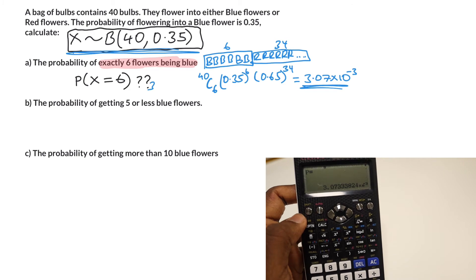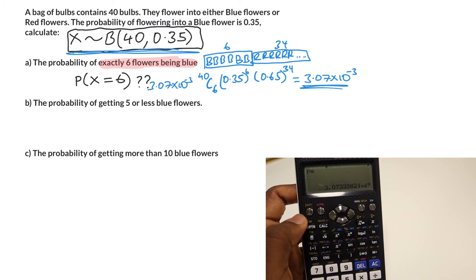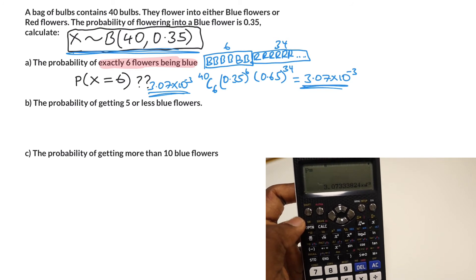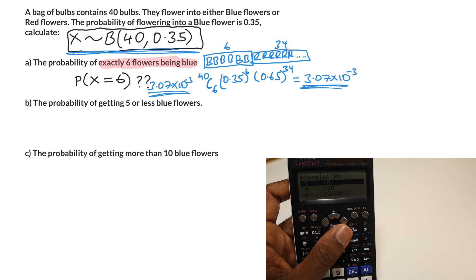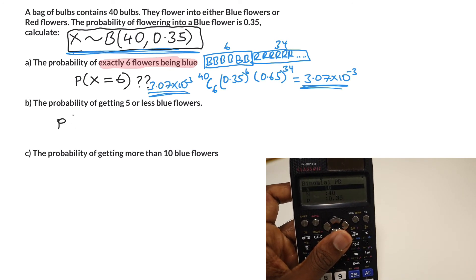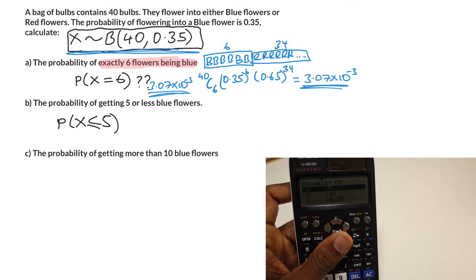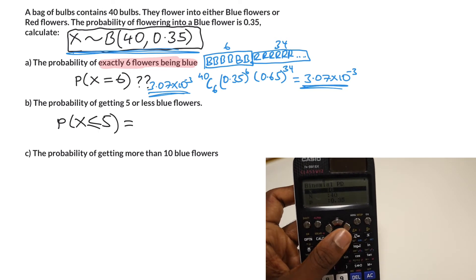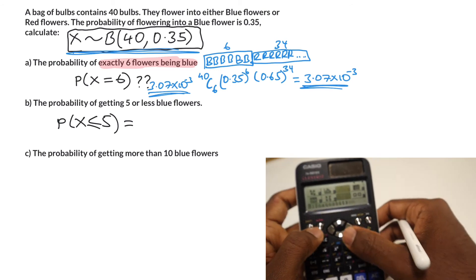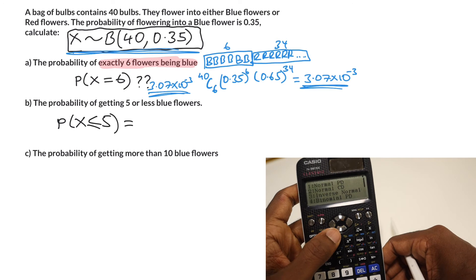The next part, part b, we're looking for the probability of getting five or less blue flowers. What does that mean? That's the probability of x being less than or equal to five. How do we do this? We're going to do this straight in the calculator.